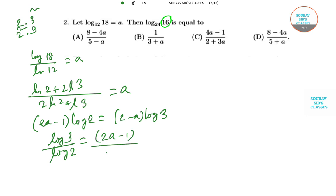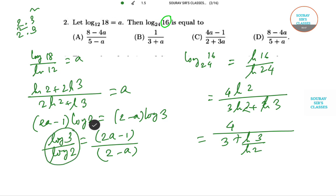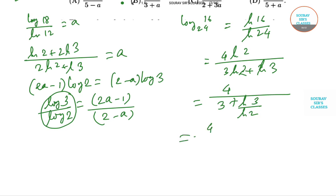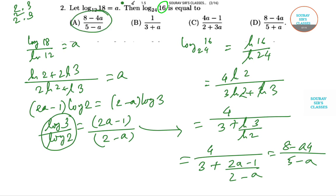Dividing through by log 2, we get (2a - 1) = (2 - a) · (log 3 / log 2). We now have log 3 / log 2 expressed in terms of a. Incorporating this value into the expression for log 16 / log 24 — noting 16 = 2⁴ and 24 = 2³ × 3 — and substituting, we get the answer as (8 - 4a) / (5 - a). The answer is option A.